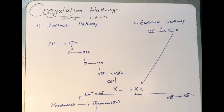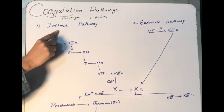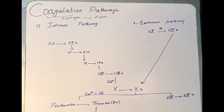Coagulation is a property of plasma and fibrinogen is present in plasma. There are basically two pathways by which coagulation occurs: one is the intrinsic pathway and the second one is the extrinsic pathway. We will go through them one by one, starting with the intrinsic pathway.